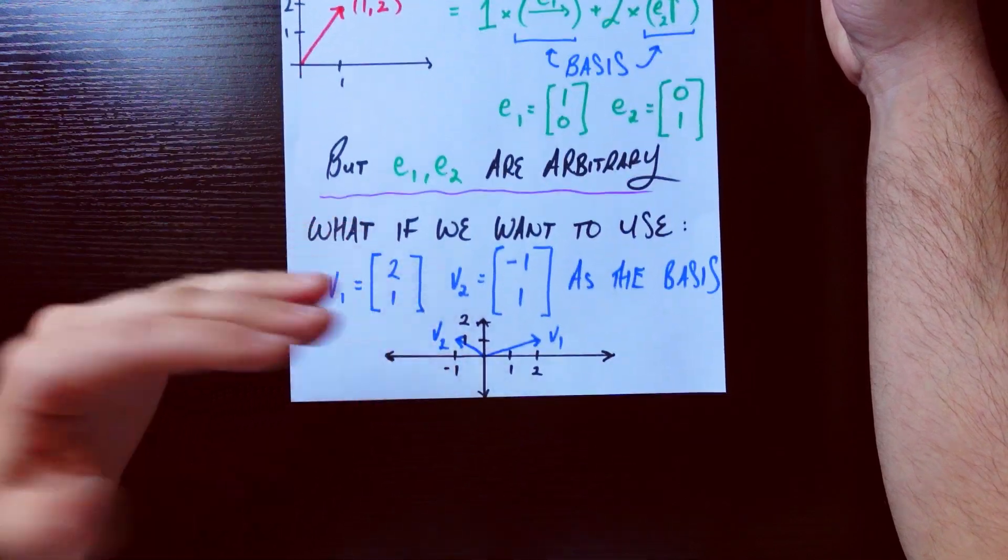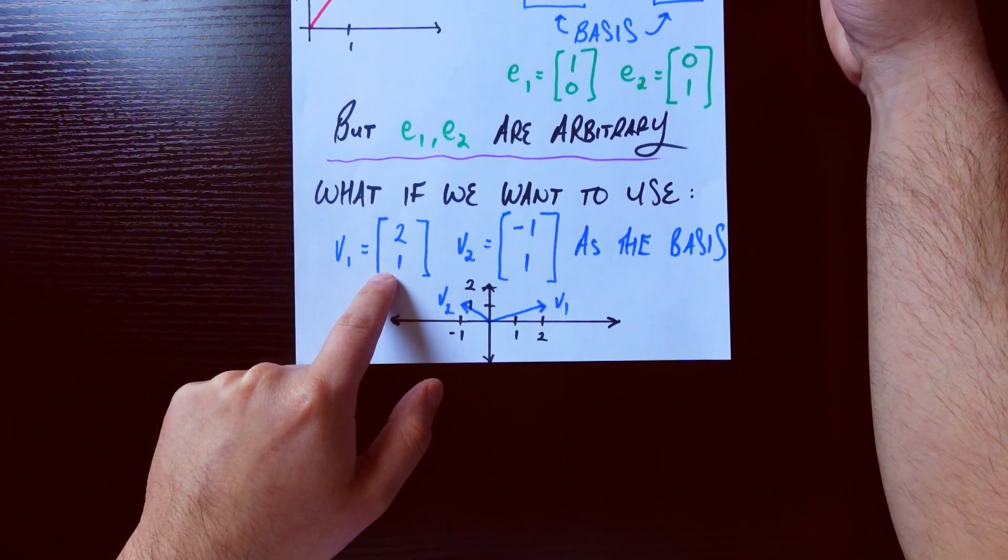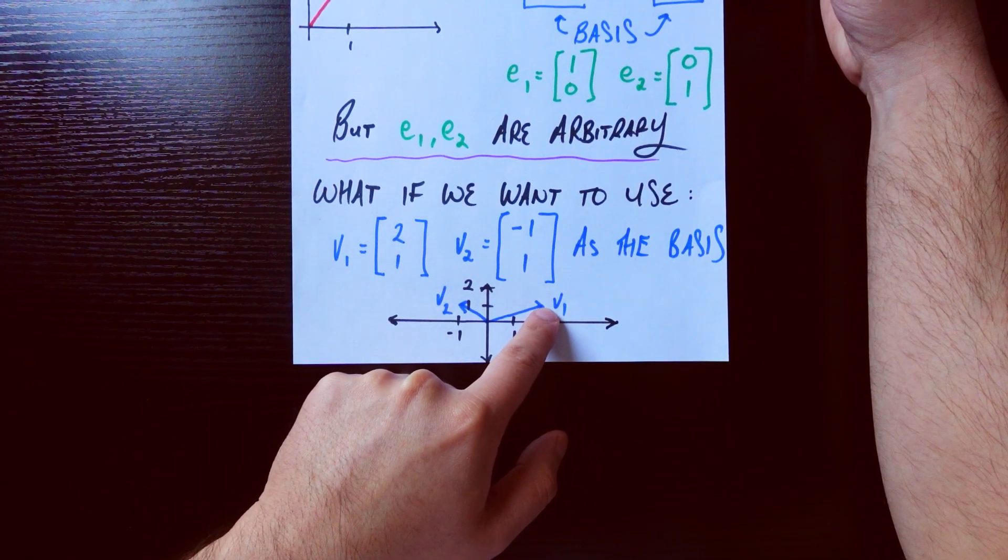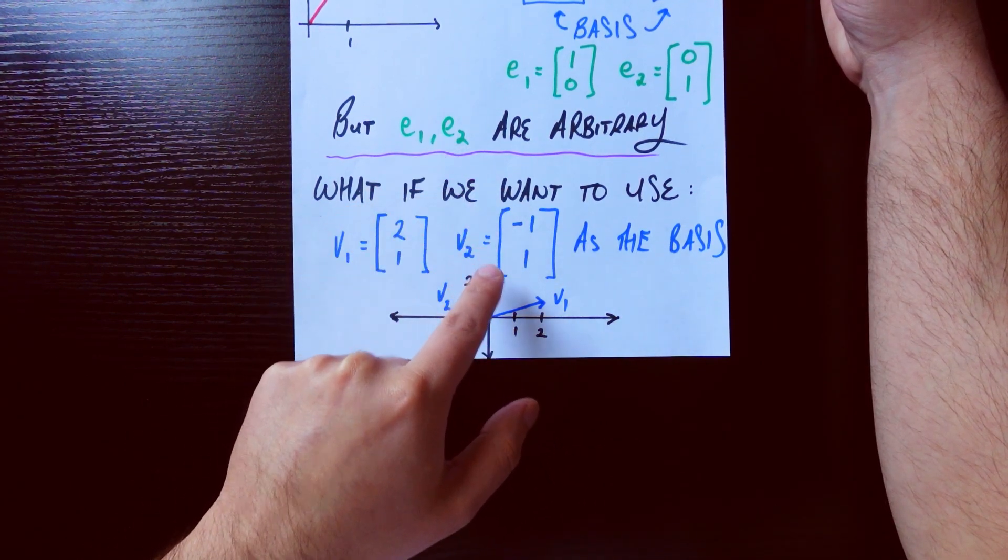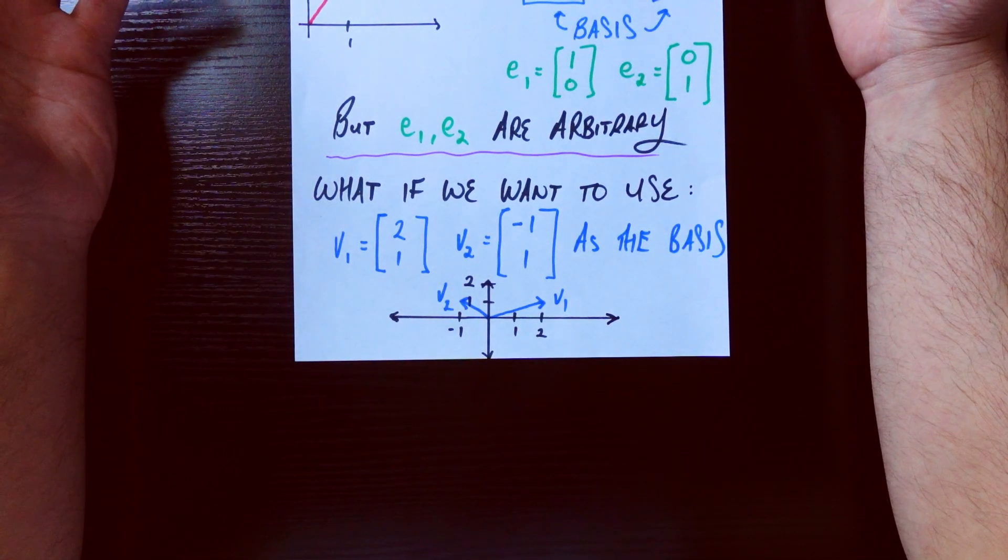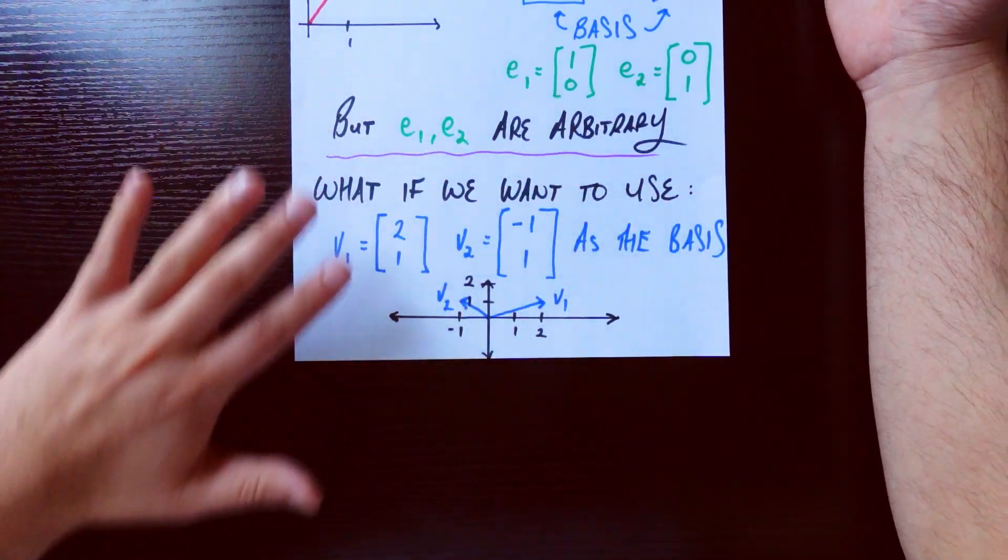For example, what if we want to switch things up and want to use this instead as the basis, where the first basis vector is [2,1], which is this vector v1, and the other basis vector is [-1,1], which looks like this. Notice these guys are not even perpendicular to each other, but at the same time, they span the entire space.